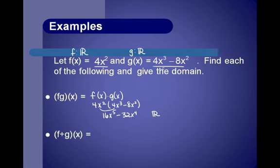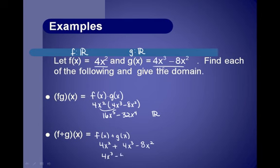For f plus g of x, by definition that means f of x plus g of x, which is 4x squared plus 4x cubed minus 8x squared. Combining like terms, we get 4x cubed minus 4x squared. The domain is all real numbers.